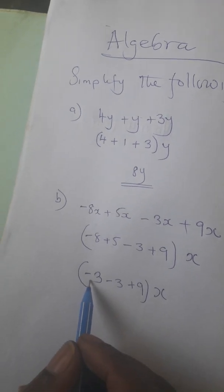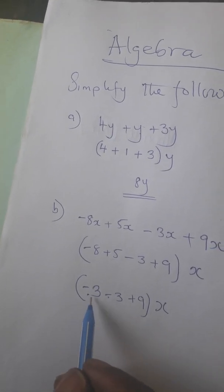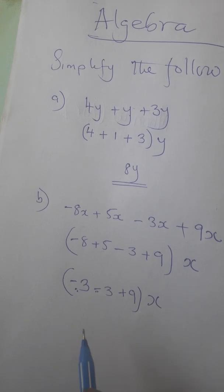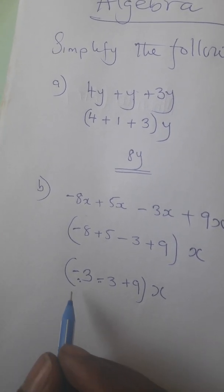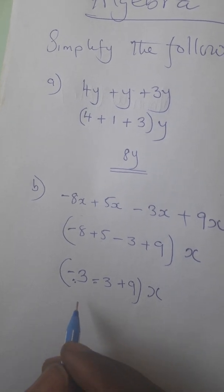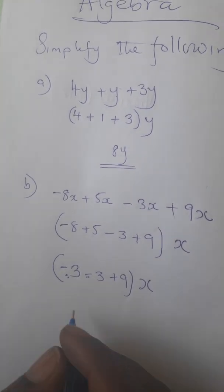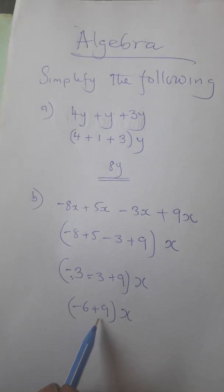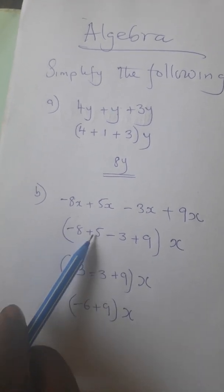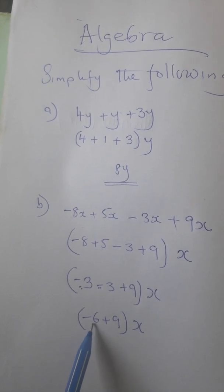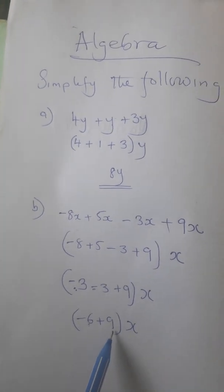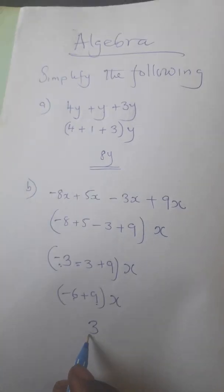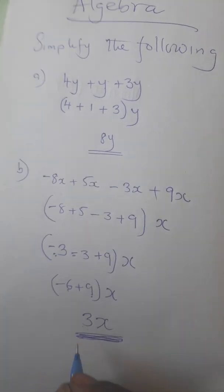Now we have negative 3 plus 9. But first, note that negative 3 and negative 3 is the same as negative 3 + negative 3. When adding integers of the same sign, you add them and keep the sign — since both are negative, the answer is negative: negative 6. Then negative 6 + 9: apply the same concept — the smaller number is 6, so subtract 6 from 9 to get 3. This 3 takes the sign of the bigger number, which is 9, so the answer is positive 3x.